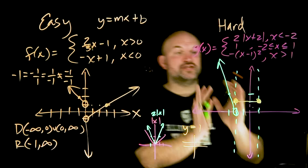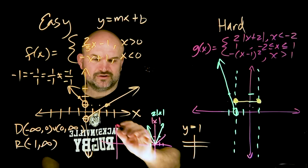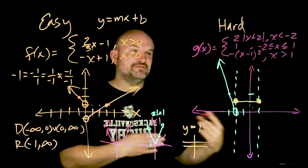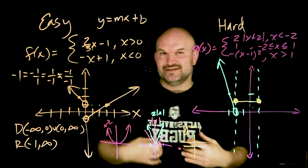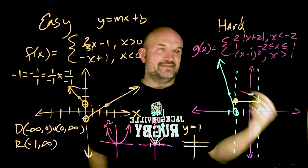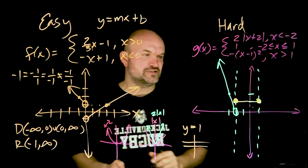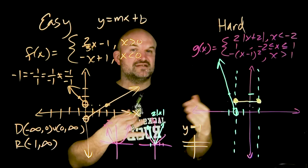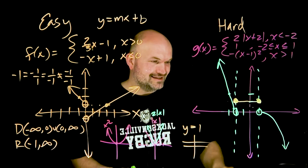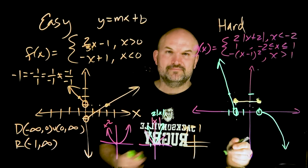For x values greater than one, we have negative x squared minus one. The quadratic gives a U-shaped graph, but multiplying by negative reflects it about the x-axis, so it opens downward. The x minus one inside shifts the graph one unit to the right. Since it's x greater than one — not greater than or equal to — we start with an open circle at x equals one. The graph then opens downward from that point. After erasing the reference lines, that completes both the easy and hard piecewise function examples.